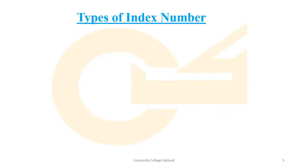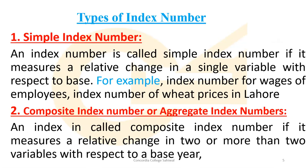Now we will discuss types of index number. We have already seen there are two types: simple index number and composite index number. A simple index number is one that measures a relative change in a single variable. For example, the index number of wages of employees is one variable, or the index number of wheat prices in Lahore — if we are looking at only one variable, then we have a simple index number.